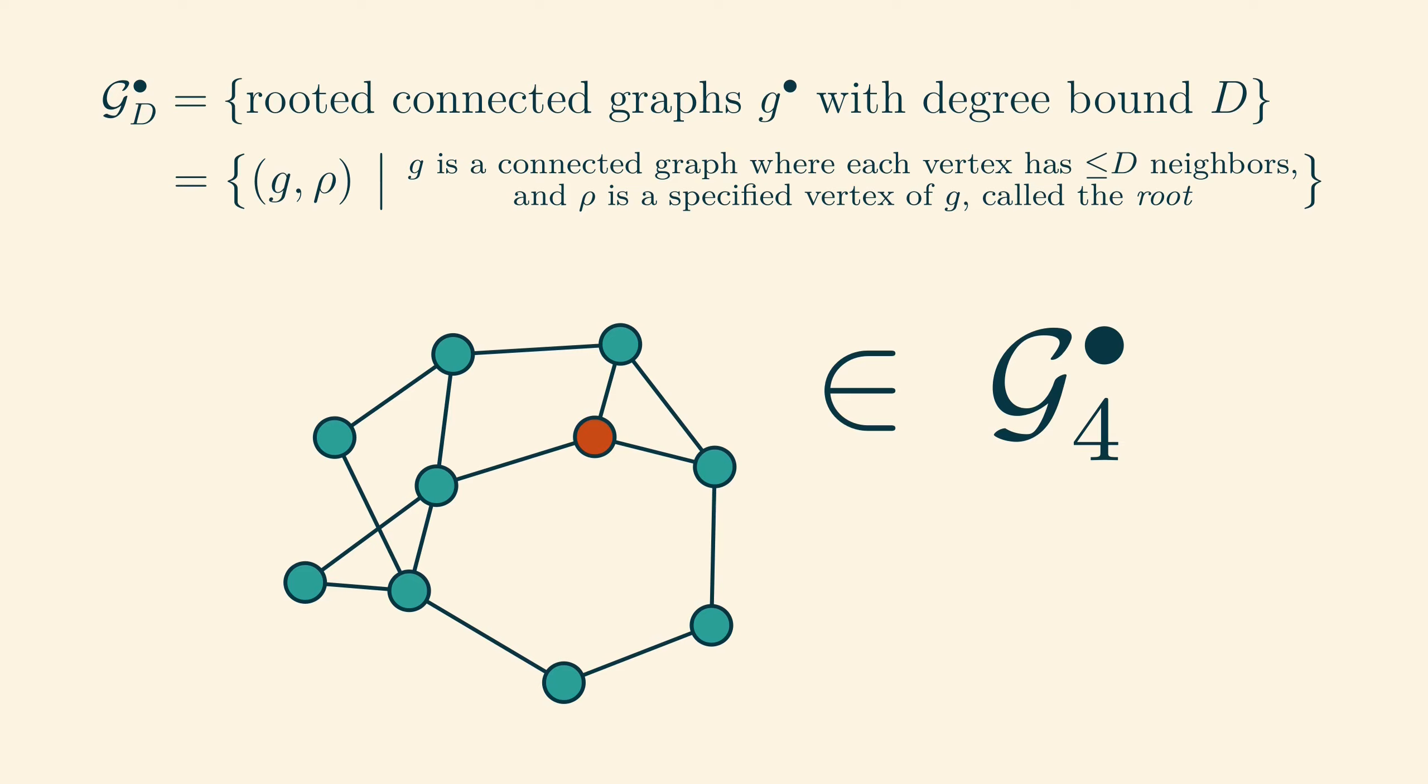This rooted graph is in g4 dot because all of its vertices have degree 4 or less. However, it is not in g3 dot because there are vertices with more than three neighbours.